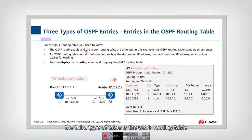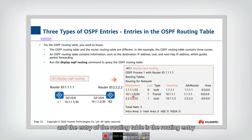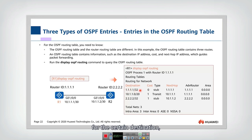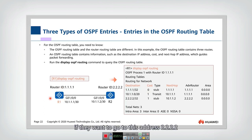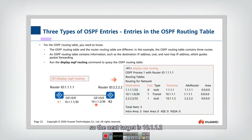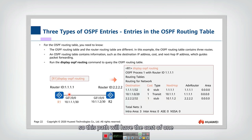The third type of table is the OSPF routing table, maintained in every router. Each routing entry tells us for a certain destination which is the next-hop router and what the cost is. For example, for router one to reach address 2.2.2.2, the next hop is interface 10.1.1.2, and the cost is one — the cost of that single link. That is the OSPF routing table.